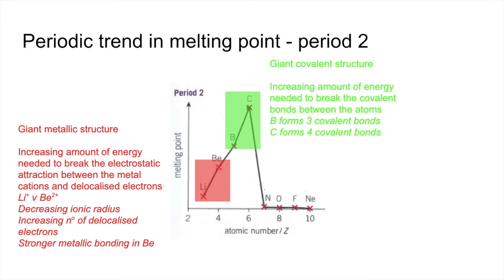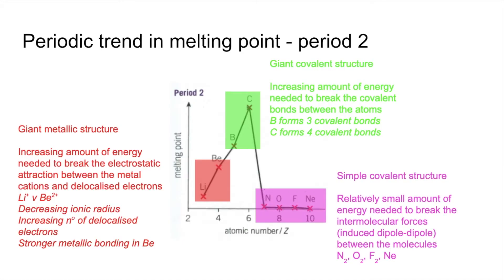Moving on to the final four elements — nitrogen through to neon — they have simple covalent structures. A relatively small amount of energy is needed to break the intermolecular forces, which are induced dipole-dipole forces because these are non-polar substances. The intermolecular forces are between molecules of N₂, O₂, and F₂. In the case of neon, it exists as single atoms.